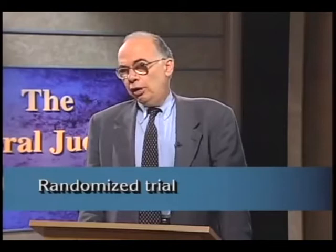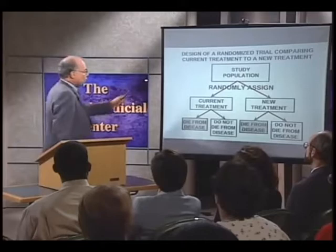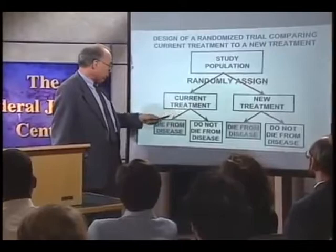The first type of study is the randomized trial, also called the randomized clinical trial, because it's often used in testing new therapies. What is the design shown here? We begin with a study population, and we randomly assign the members of that population to a current treatment or to a new treatment.